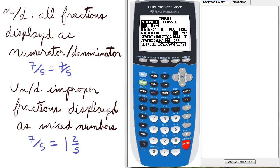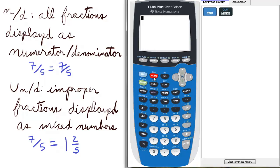In the n over d mode, all fractions are displayed as numerator over denominator. To illustrate this, let's quit and go to the home screen.